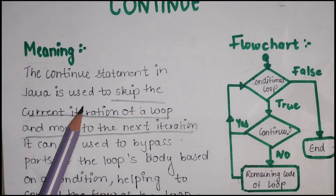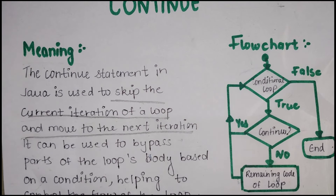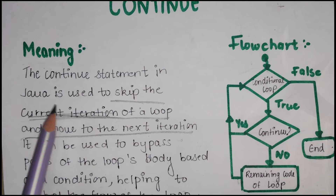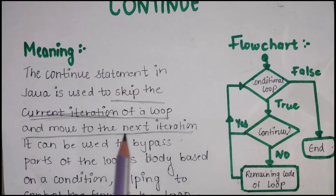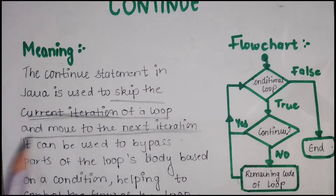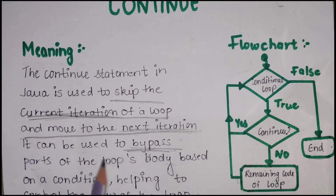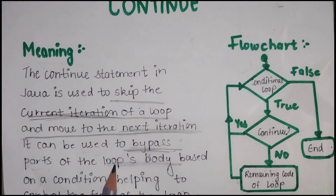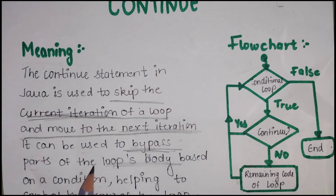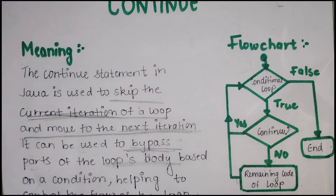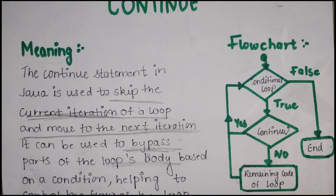So, skip the current iteration means that in our code, when a continue statement is encountered, we skip the current iteration and execute the next iteration. It can be used to bypass a part of the loop's body — so if we have to bypass any particular step, we skip that specific segment and continue with all the remaining conditions.